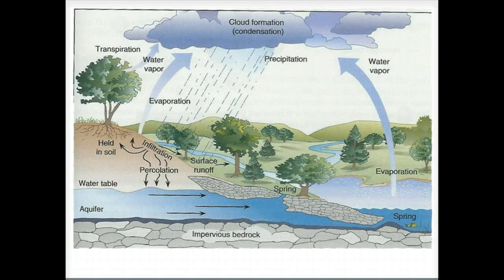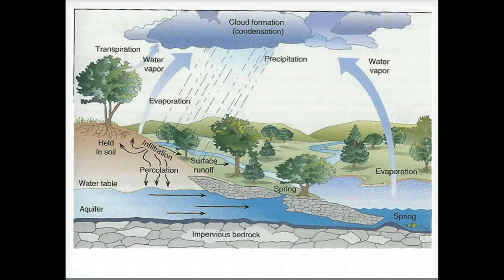This slide illustrates the hydrological cycle. The energy of the sun evaporates water from the oceans, separating the fresh water from the salt that's dissolved in it. Precipitation then returns it to the surface for use in the ecosystem.